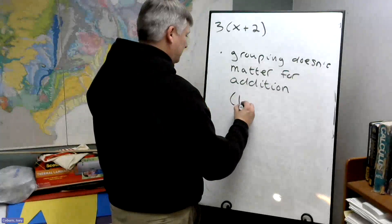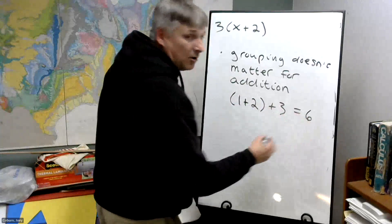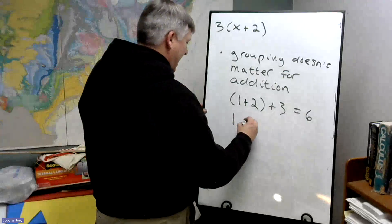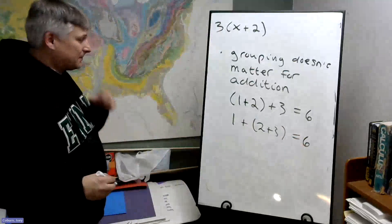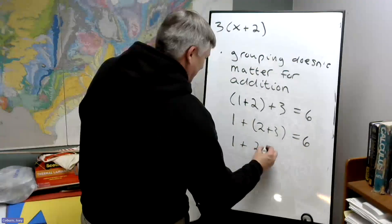So if we do 1 plus 2 first then add 3, okay, we get 6. But if we did 1 after adding 2 plus 3, we're still going to get 6. In fact, if you didn't have any of these parentheses, you still get 6.